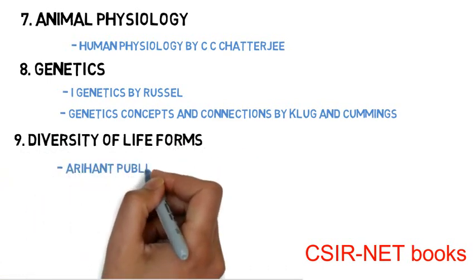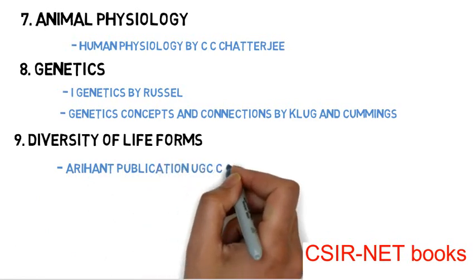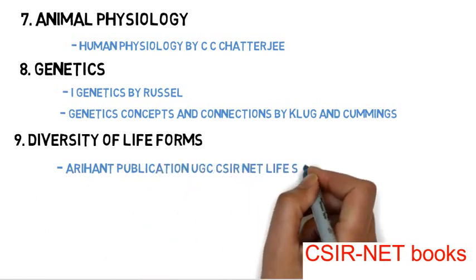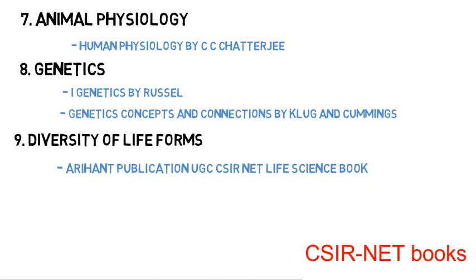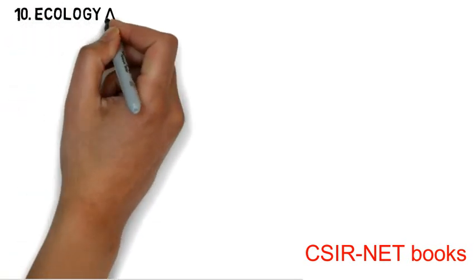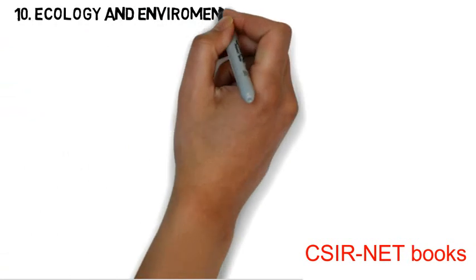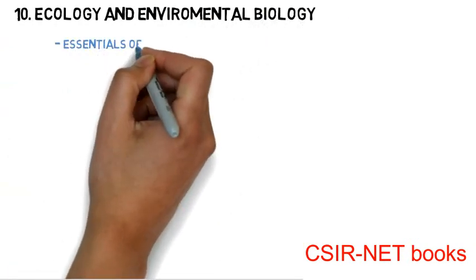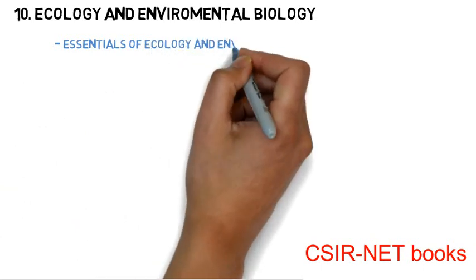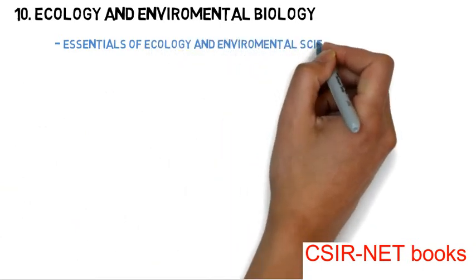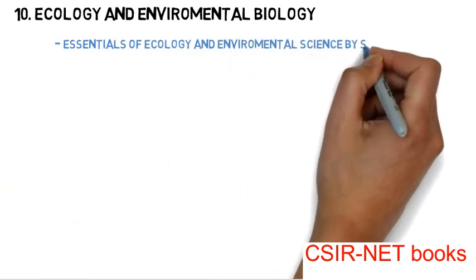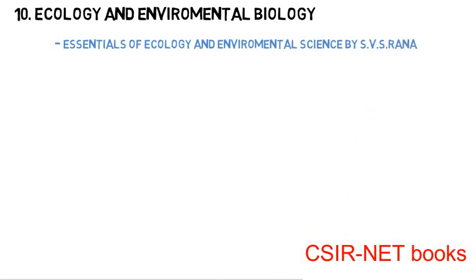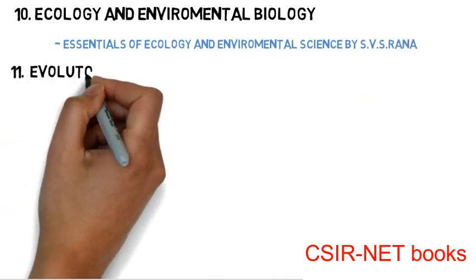For the ninth topic, diversity of life forms, you have to read the Arihant Publications UGC CSIR NET Life Sciences guide. For the tenth subject, ecology and environmental biology, you have to read Essentials of Ecology and Environmental Science by S.V.S. Rana.